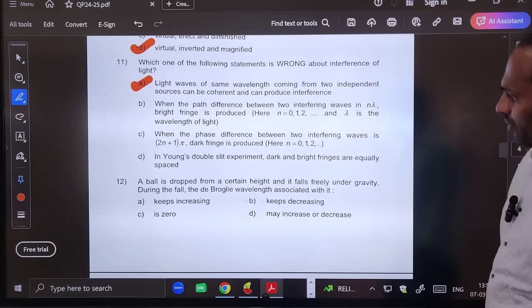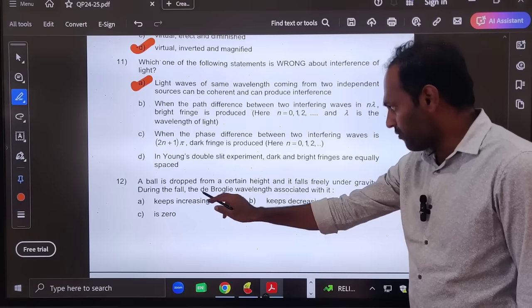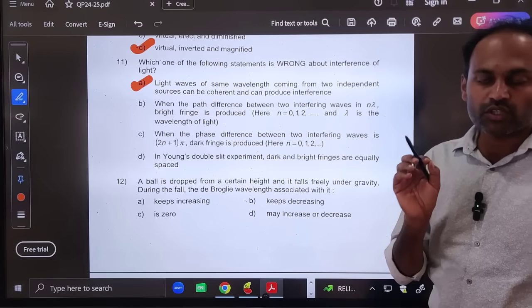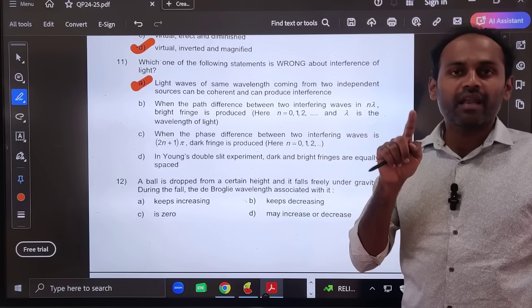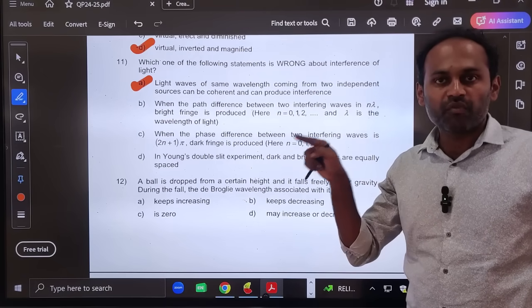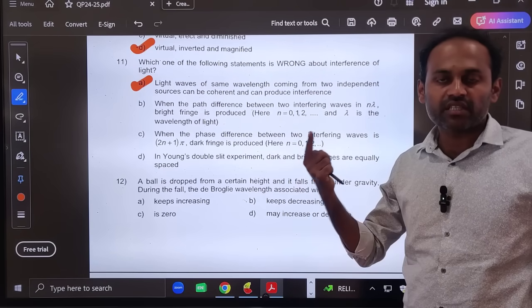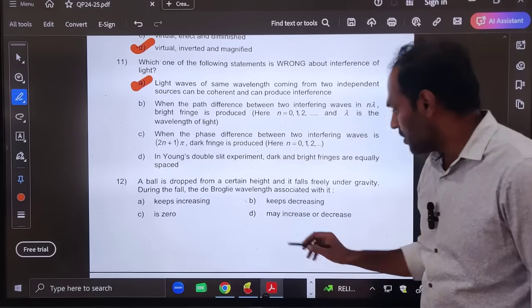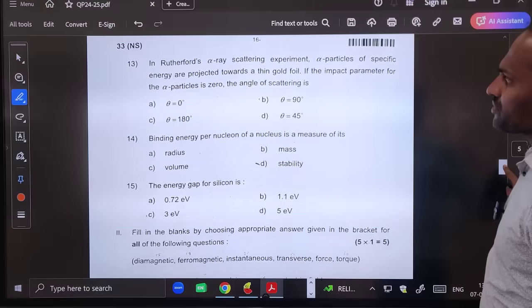Twelfth question: A ball is dropped from a certain height and it falls freely under gravity. During the fall, the de Broglie wavelength associated with it. De Broglie wavelength associated with the body of mass m and velocity v is given by λ = h/mv. Velocity is in denominator. So when the body is falling down, its velocity increases. If the velocity in the denominator increases, then wavelength has to decrease. So keeps decreasing, option B is correct.